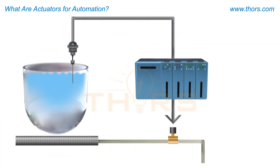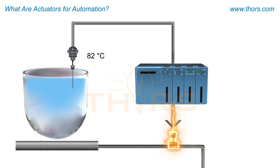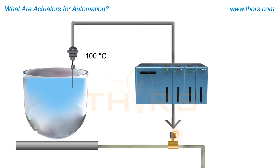For example, a temperature sensor will detect that a vat filled with fluid is dropping below 100 degrees Celsius or 212 degrees Fahrenheit. Therefore, the controller will signal the valve connected to a burner that it needs to open to allow gas to flow in order to bring the temperature back up to 100 degrees Celsius or 212 degrees Fahrenheit.